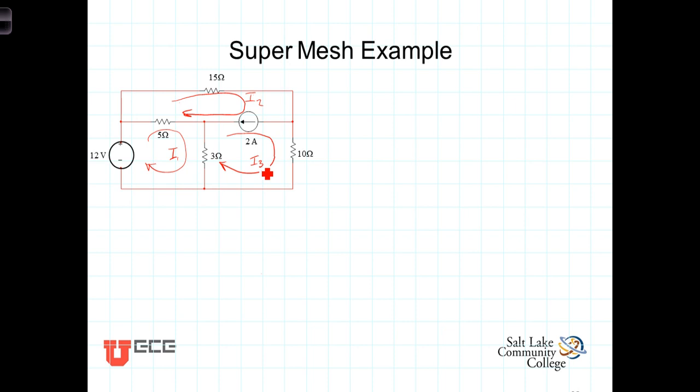And further, before we even get started, we'll notice that separating mesh 2 from mesh 3 is a branch that contains a current source. And as we've mentioned in the past, we don't have a numerical or mathematical relationship between the voltage across a current source and the current itself.